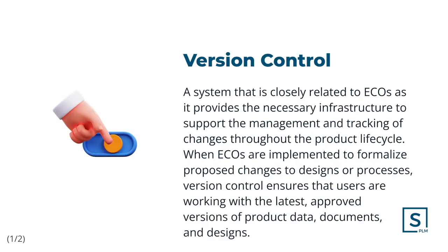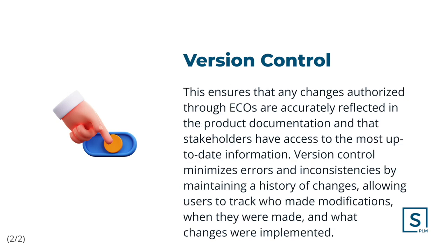Version Control is a system closely related to Engineering Change Orders, or ECOs, as it provides the necessary infrastructure to support the management and tracking of changes throughout the product lifecycle. When ECOs are implemented to formalize proposed changes to designs or processes, Version Control ensures that users are working with the latest approved versions of product data, documents, and designs. Version Control minimizes errors and inconsistencies by maintaining a history of changes, allowing users to track who made modifications, when they were made, and what changes were implemented.